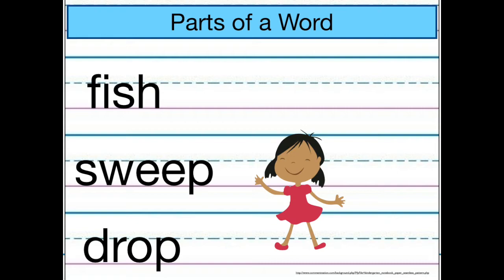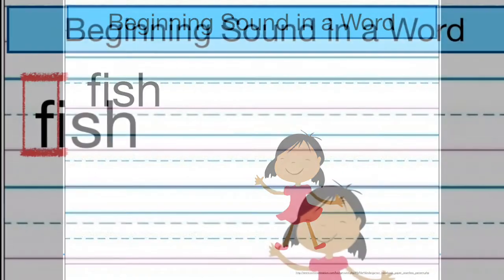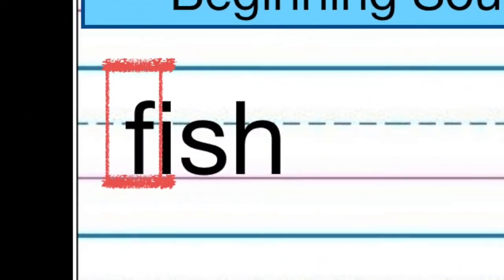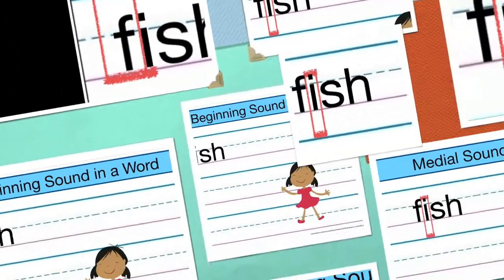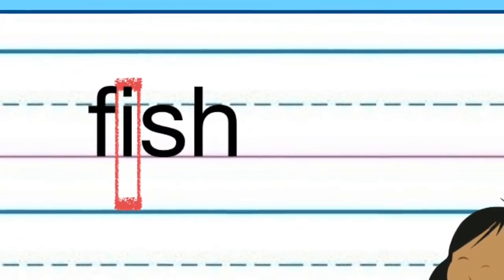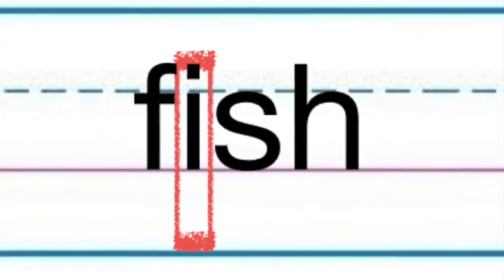Let's start with the first word: fish. When I read this word, I hear different sounds. I hear at the beginning because F is the first letter. Next I hear in the middle because I is in the middle.